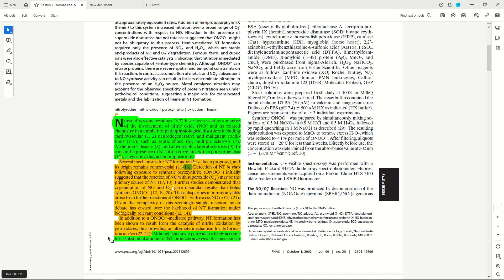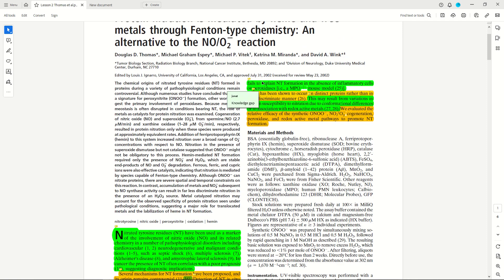Now, what follows says, although leukocyte peroxidases likely account for substantial amount of NT production in vivo, this mechanism fails to explain NT formation in the absence of inflammatory cells or peroxidases. So what it's directly discussing here is a knowledge gap. The sentence is saying that we know that this works with peroxidases, but how do we get nitrated tyrosine formation if there are no peroxidases and there's no route towards forming peroxynitrite? So that's indicating a gap in our knowledge, and this indicates what this paper is going to attempt to address.